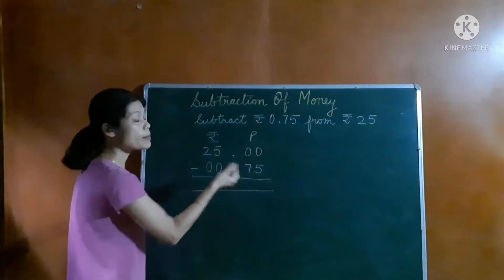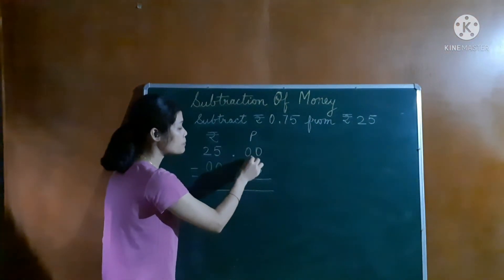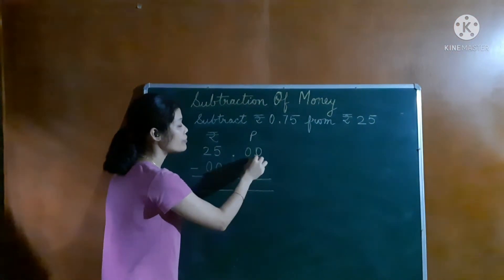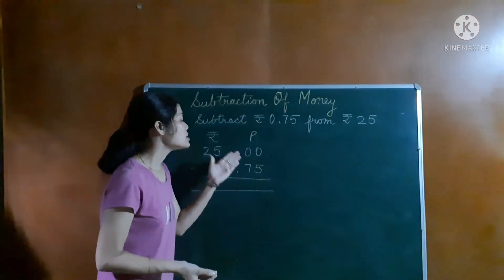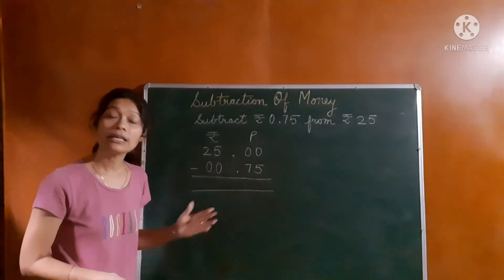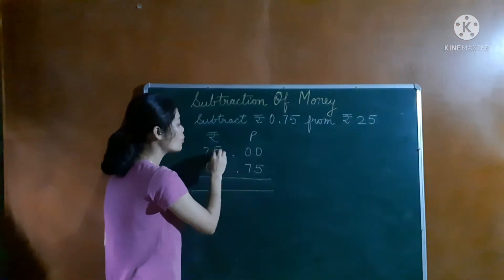Now we have to subtract. Here we can see we have to subtract 75 from 0 paise, which is not possible. So what we will do? We will borrow 1 rupee.